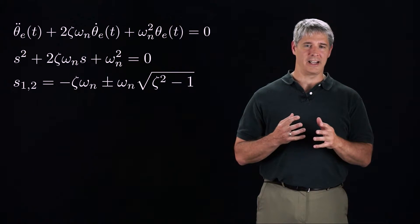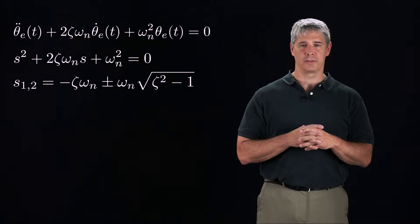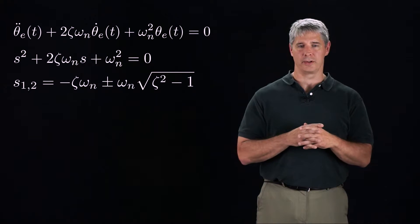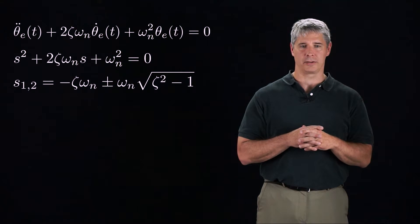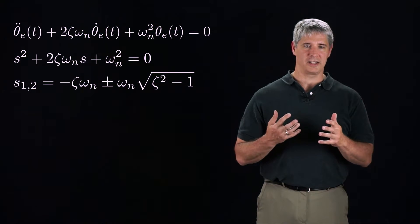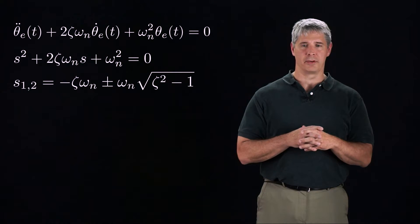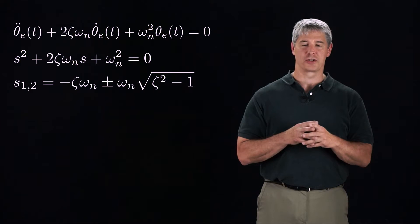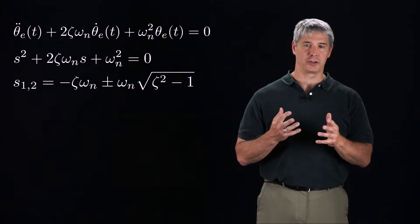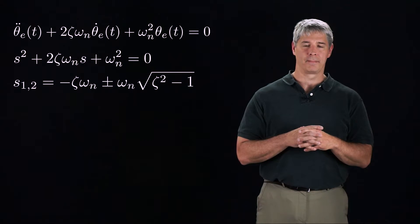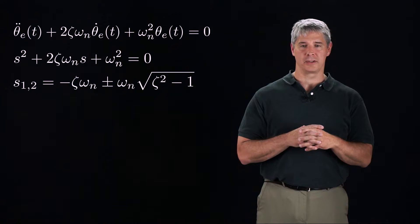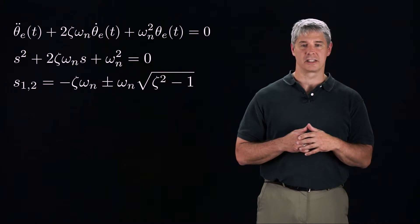Since zeta and omega n are real numbers, the two roots are real values if the quantity inside the square root is greater than or equal to 0. In other words, s1 and s2 are real numbers if the damping ratio zeta is greater than or equal to 1. If zeta is less than 1, the square root produces an imaginary number and the roots are complex conjugates.